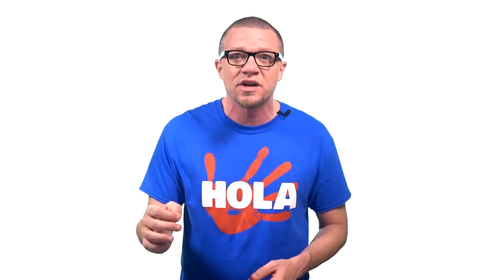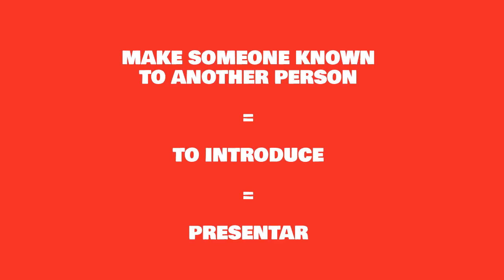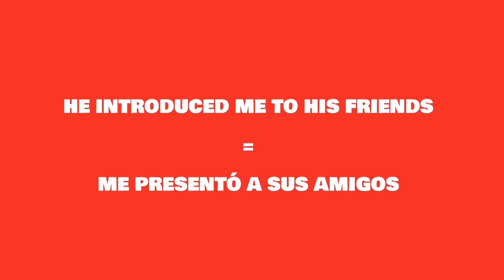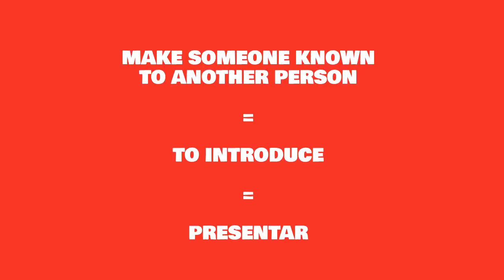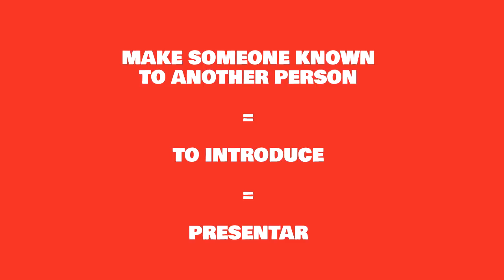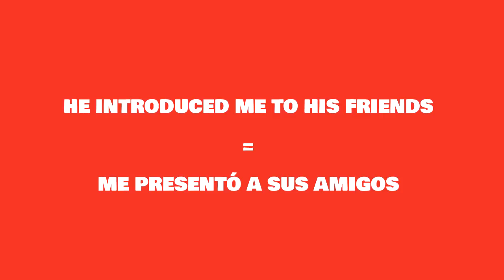So let's start with that one situation. In English, when we make someone known to another person, we say we introduce them. Well, in Spanish, when you make someone known to another person, you can't use introducir — you have to use presentar. "He introduced me to his friends" would be me presentó a sus amigos. You'll hear stuff like te presento a mi hermano all the time, which is the best way to say "I introduce you to my brother."